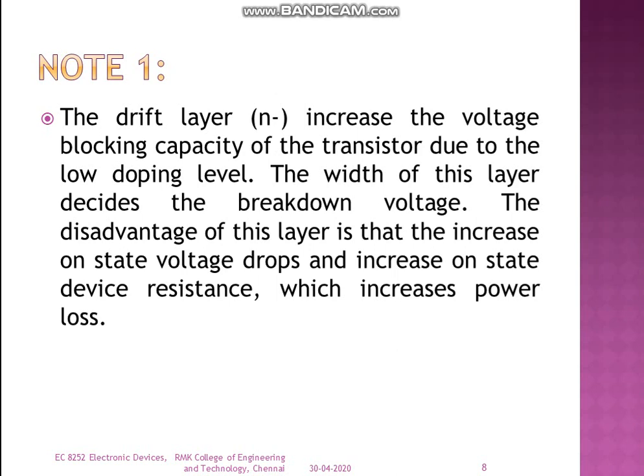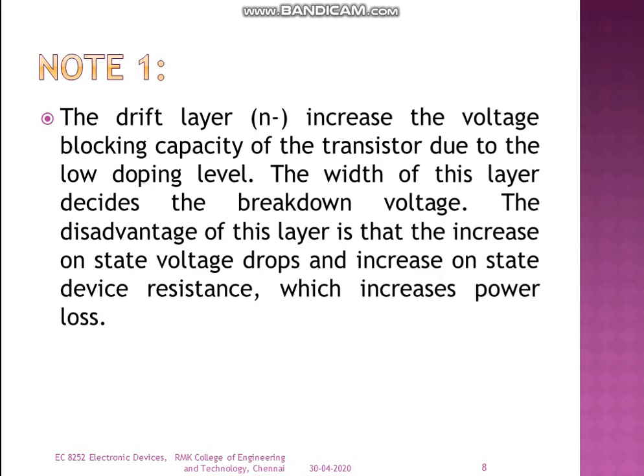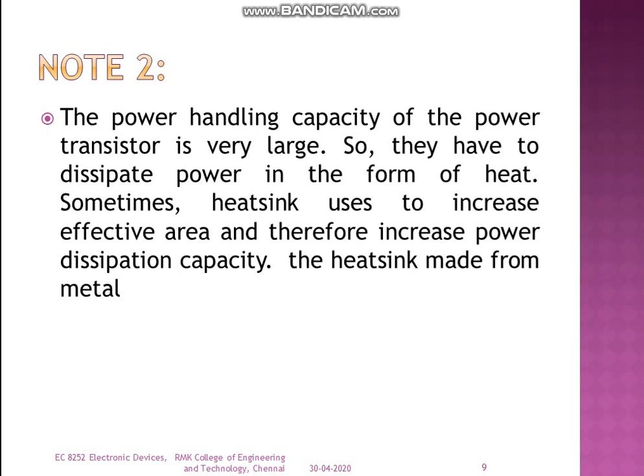An important point to note: the collector drift layer increases the voltage blocking capability of the transistor due to its low doping level. The width of this layer decides the breakdown voltage. The disadvantage is that it increases the on-state voltage drop and on-state device resistance, which increases power loss. The power handling capability of the power transistor is very large, so heat sinks are used to increase the effective area and therefore increase power dissipation capacity.